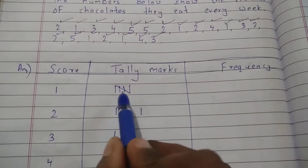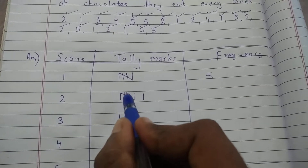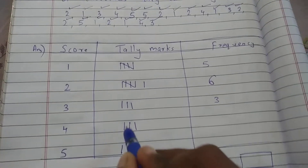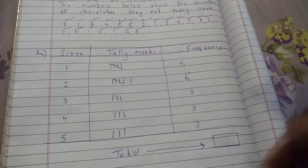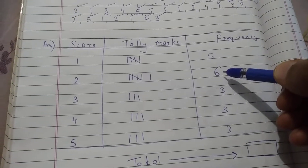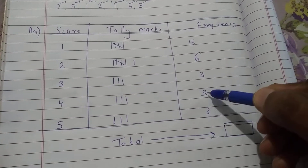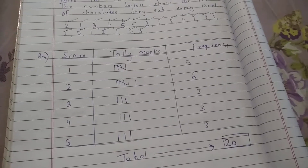Now I will write the frequency — it's very easy. Just count the number of tally marks. For the number one: one, two, three, four, five — that is five. For two: one, two, three, four, five, six — that is six. For three: one, two, three. For four: one, two, three. For five: one, two, three. Now we add these numbers: five plus six gives eleven, eleven plus three gives fourteen, fourteen plus three gives seventeen, and seventeen plus three gives twenty.